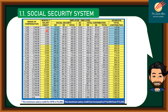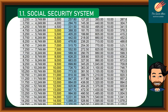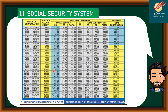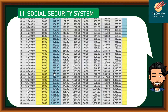The table shows the monthly salary credit starting from 1,000 up to a maximum of 16,000, along with the range of compensation. For example, if you are receiving 10,000 pesos per month, your compensation range is from 9,750 to 10,249.99. The employer's share is 773.50 pesos, while the employee's share is 381.50 pesos.